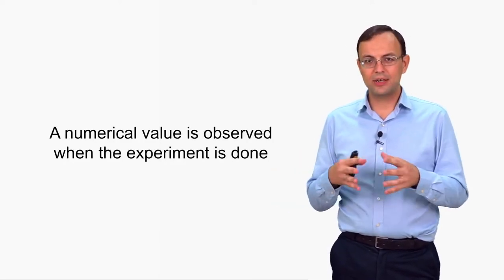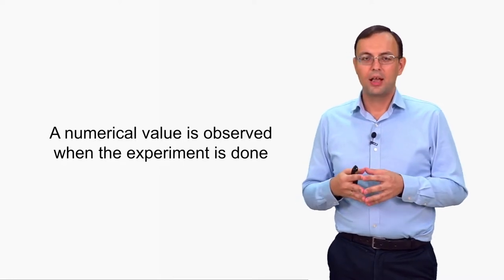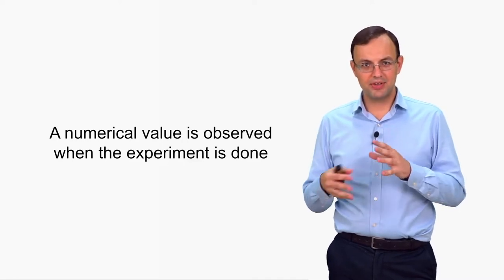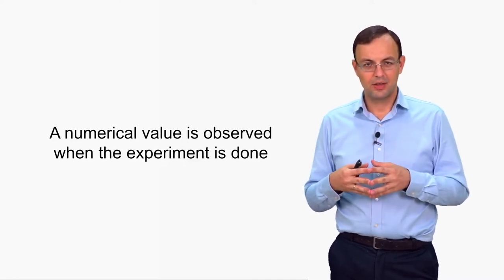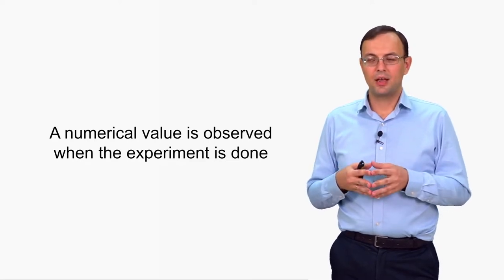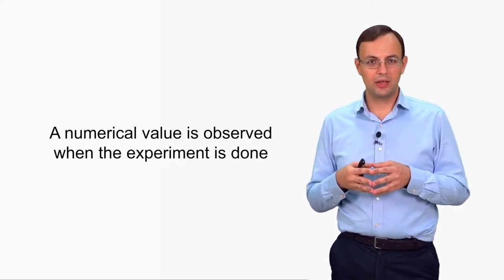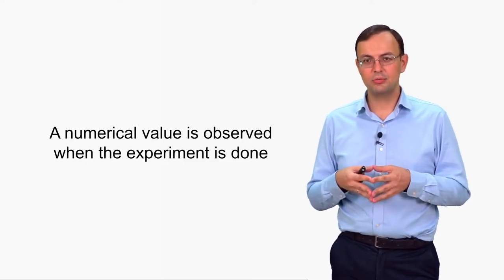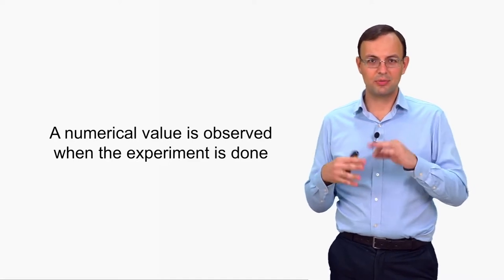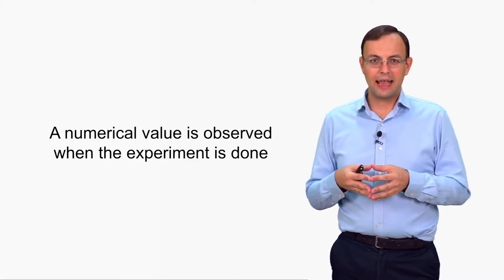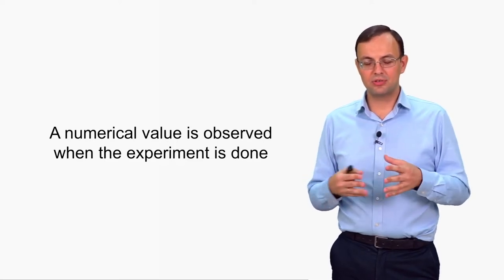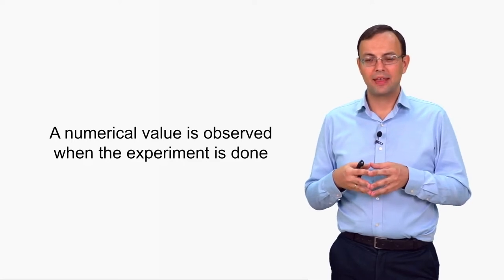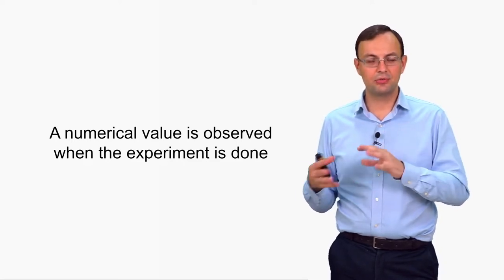When we are dealing with random variables, a numerical value is observed every time the experiment is repeated. For example, if we consider a situation where a teacher chooses a student to ask a question — when we were talking about random events, we were interested in some nominal features of these students, for example: